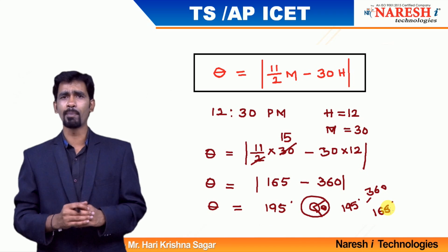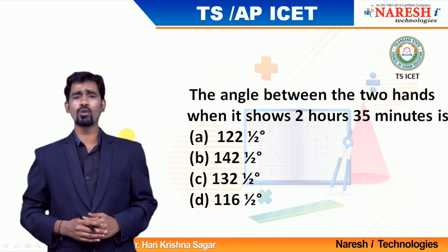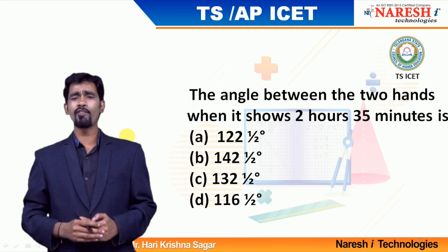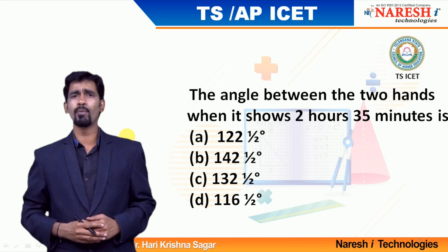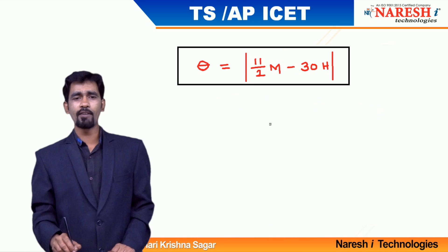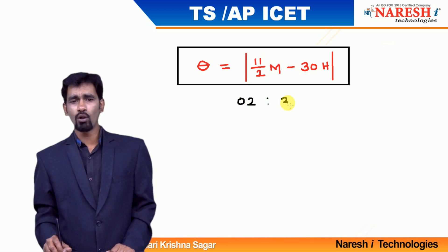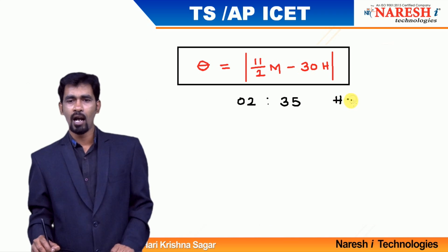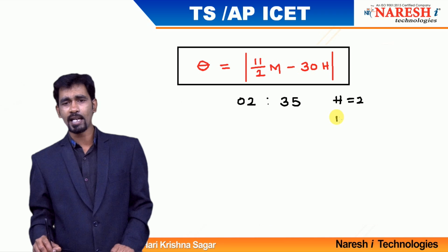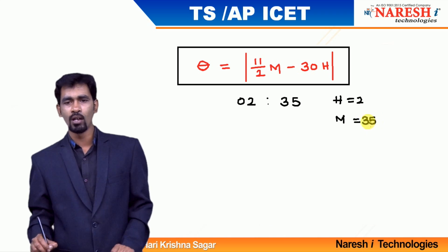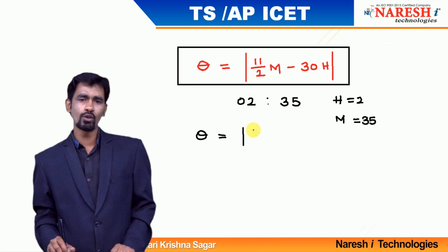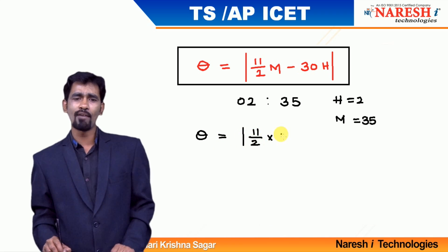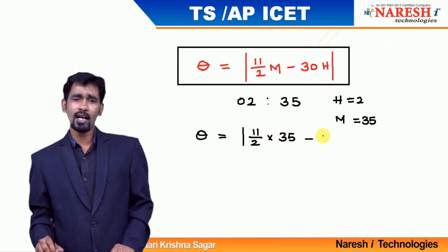Now let us look at the earlier question: what is the angle between the two hands when the time is 2 o'clock 35 minutes? 2 o'clock 35 minutes is the given time and we need to find the angle between them. Use the same formula. At 2 o'clock 35 minutes, the hour hand is pointing towards 2, so h value is 2. The minutes hand is pointing towards 35, so m is 35. H value and m value are given; we have to find theta.